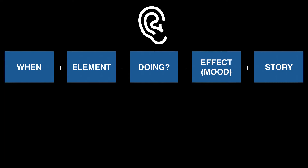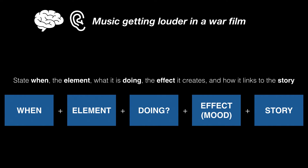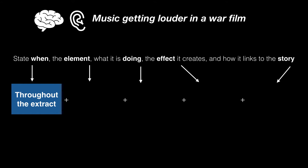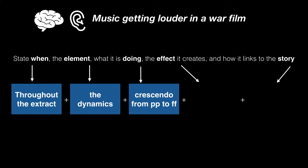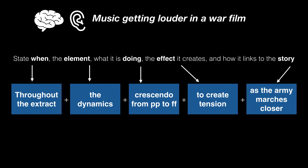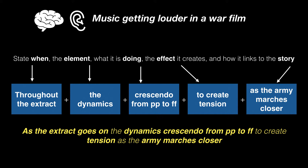We need to imagine that we're hearing music getting louder in a war film, thinking about: when it's happening, which element, what it's doing, the mood, and the story. The music gets louder throughout the extract — it's the dynamics. There's a crescendo, from PP to FF, from pianissimo to fortissimo, from very quiet to very loud. The effect creates tension. In a war film, maybe an army is marching closer. And crucially, my sentence follows this exact structure: 'Throughout the extract, the dynamics crescendo from PP to FF to create tension as the army marches closer.'